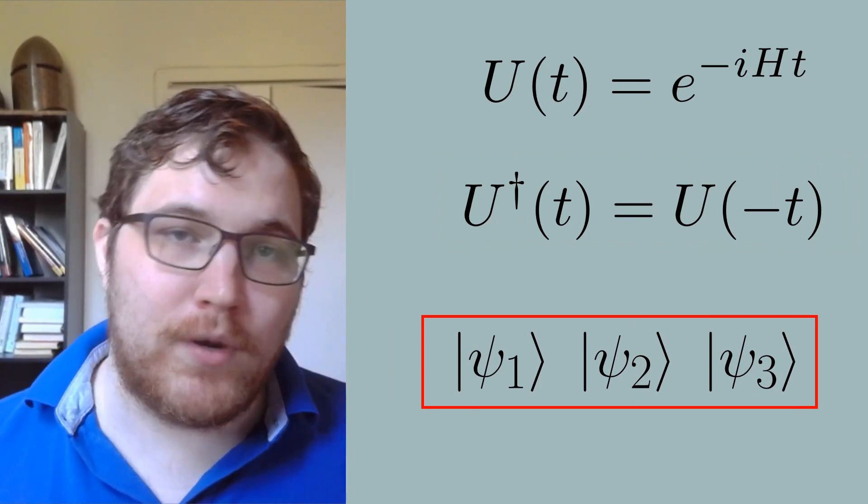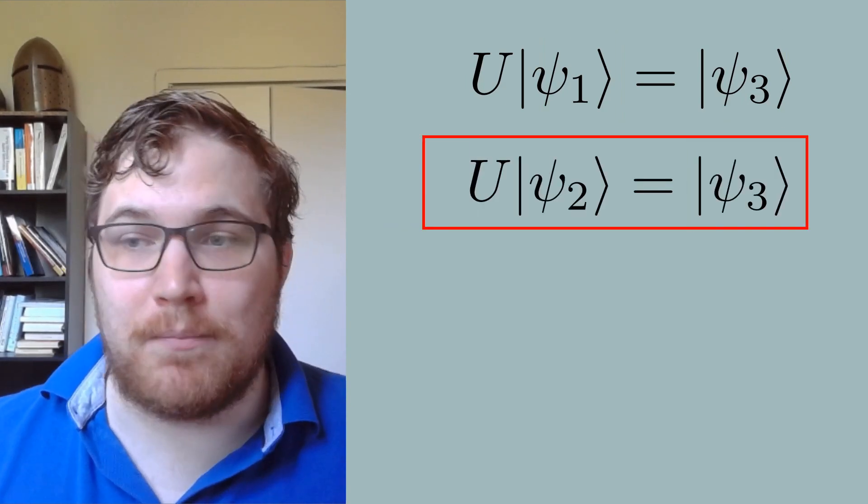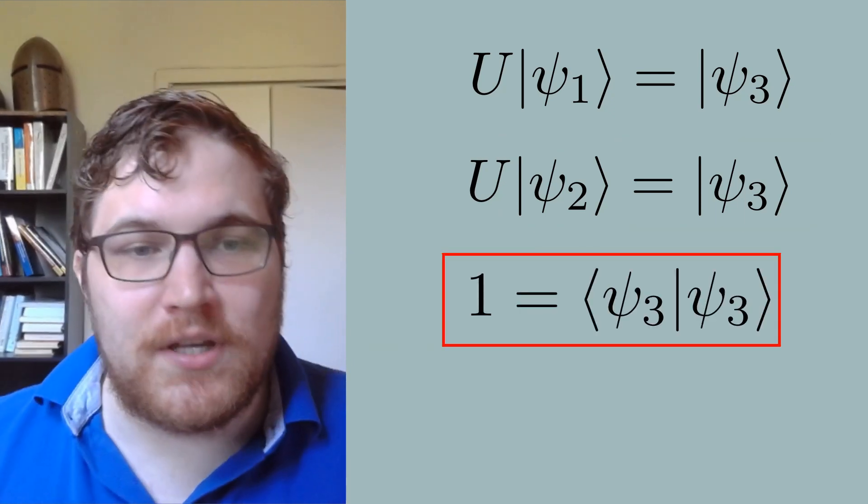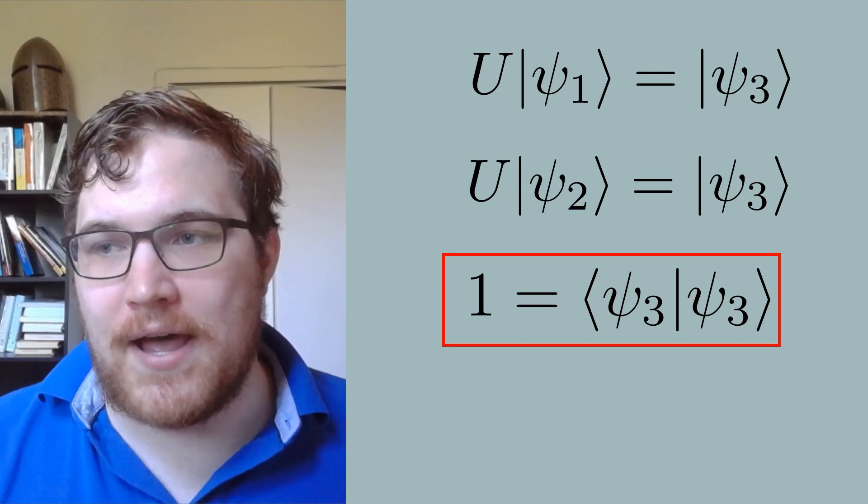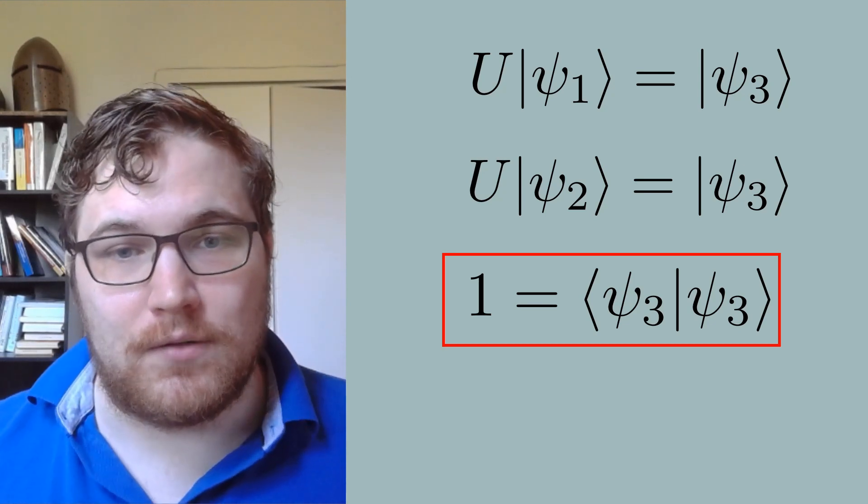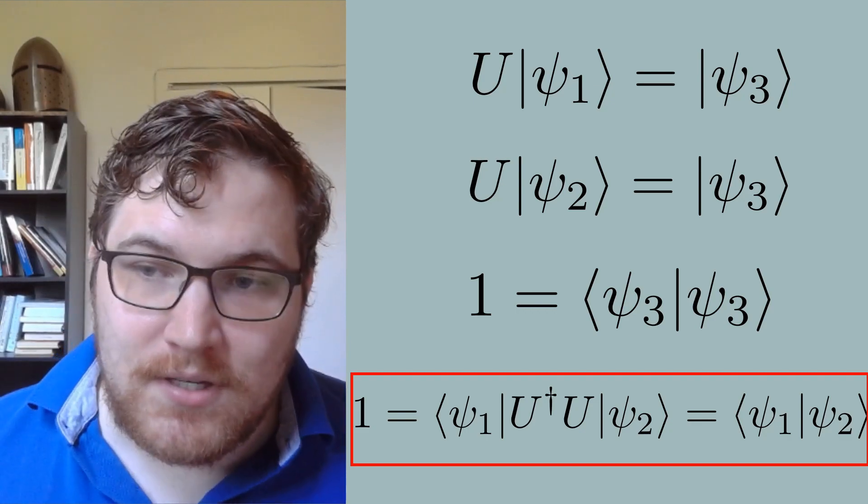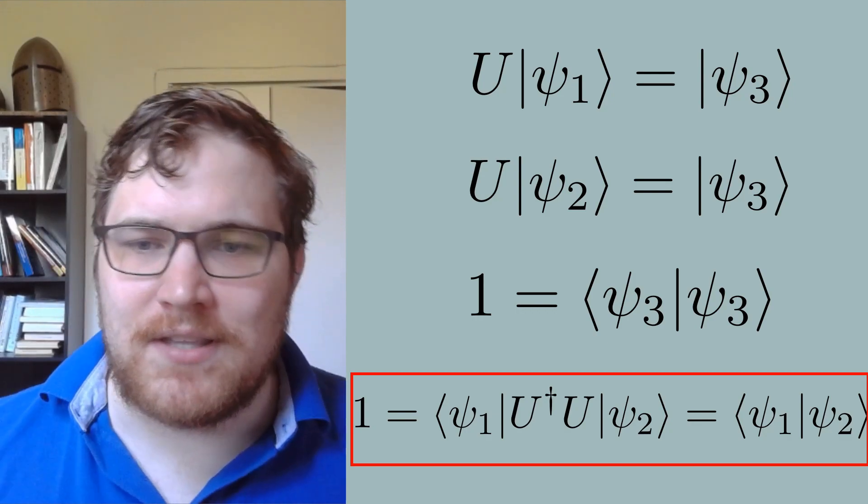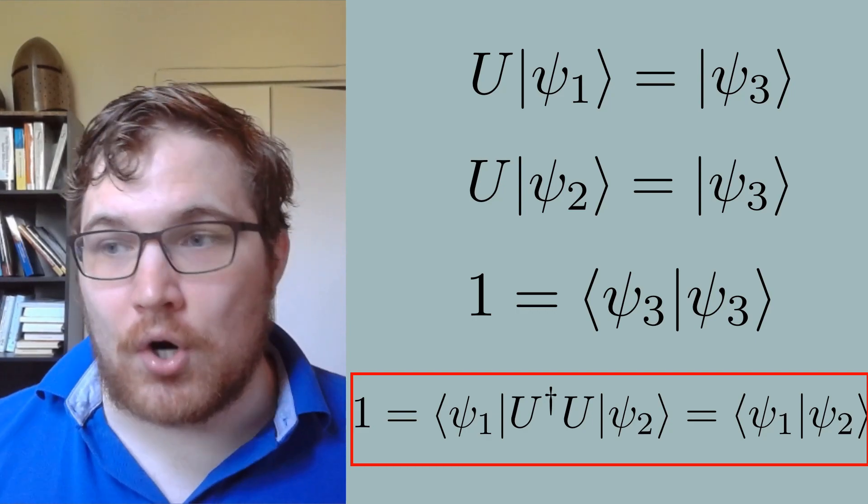We are interested in proving that if we can apply a unitary operator U to both ψ₁ and ψ₂ to get back ψ₃, then ψ₁ and ψ₂ must be identical. Since ψ₃ is normalized, we can take the first equation and take its Hermitian conjugate and then take the product with that and the second equation. This tells us that the overlap between ψ₁ and ψ₂ is 1. And since these two states are normalized, it tells us that they are in fact identical.